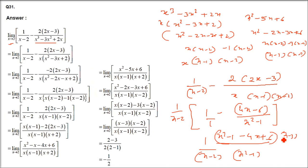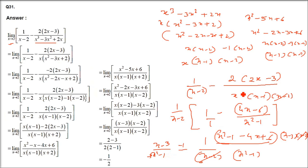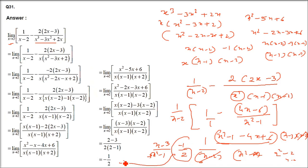Replacing and cancelling (x-2) from numerator and denominator, we are left with (x-3)/[x(x-1)]. Note: x·(x-1) is x² - x, not x² - 1 — correction noted. Now put x as 2: (2-3)/[2(2-1)] = (-1)/(2·1) = -1/2. The answer is -1/2.